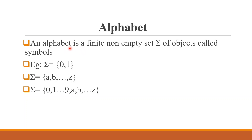Now let's move to strings. An alphabet is represented using the symbol sigma. It is a set and each element is called a symbol. For example, sigma equals the set {0, 1}. Using these symbols 0 and 1, we can form strings, also called words.